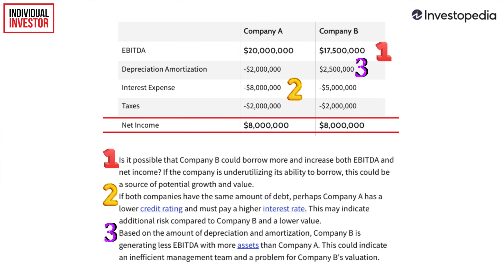To illustrate how you can use EBITDA to analyze two companies, here is an example from Investopedia. We have two hypothetical companies, Company A and Company B, and they both have produced exactly the same net income of $80 million over a period of time. However, Company A has a higher EBITDA of $20 million versus Company B's EBITDA of $17.5 million. The first point is that Company B seems to have room to bump up their EBITDA by borrowing some money that they could use to source potential growth and increase their value in the future.